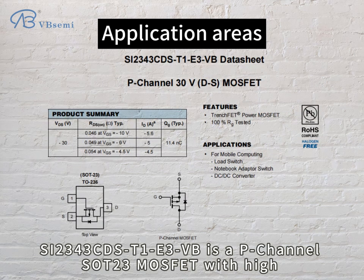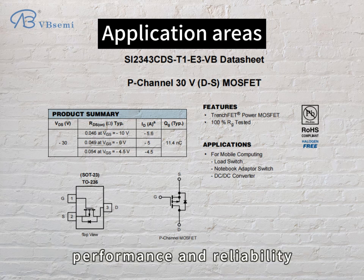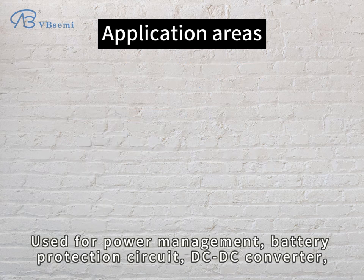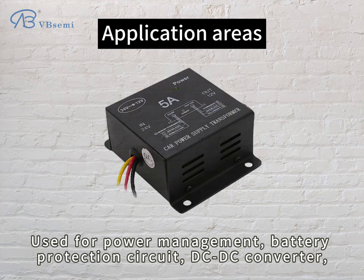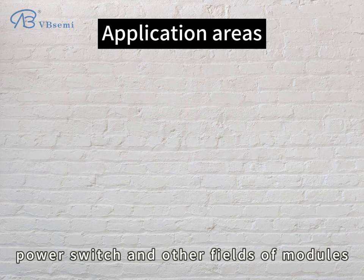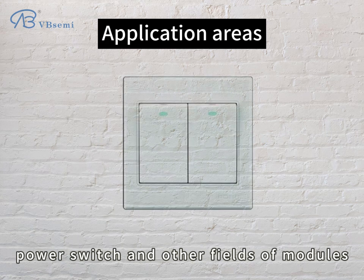SI2343CDS-T1-E3-VB is a P-Channel SOT-23 MOSFET with high performance and reliability. It is used for power management, battery protection circuits, DC-DC converters, power switches, and other fields and modules.